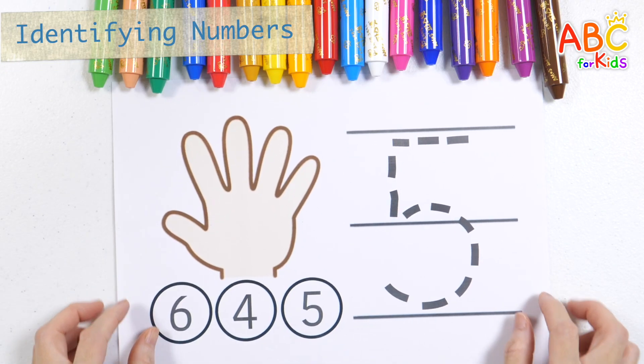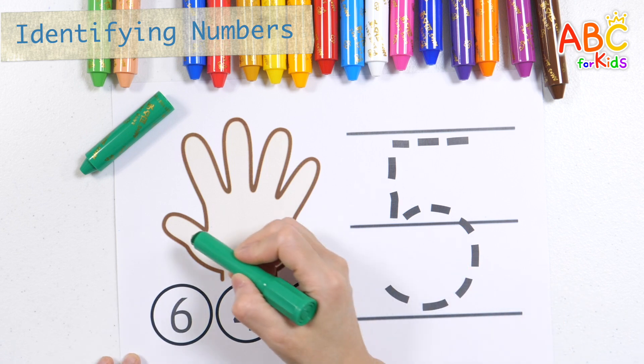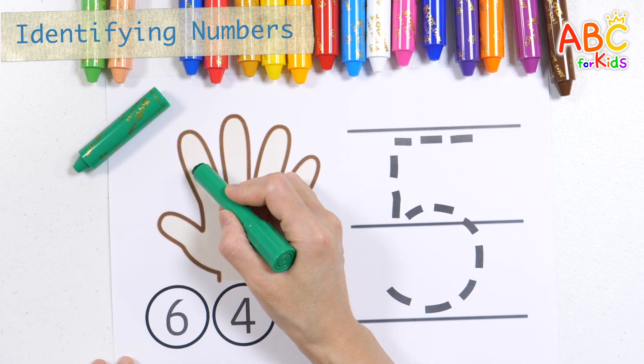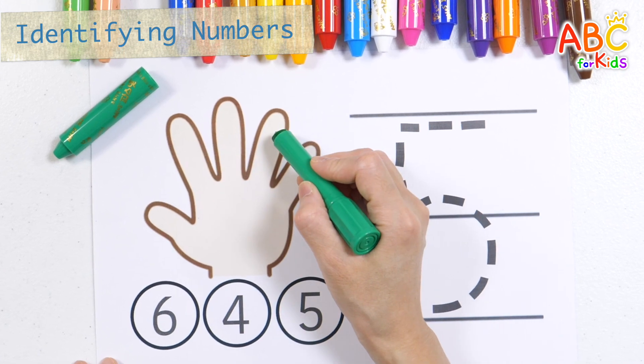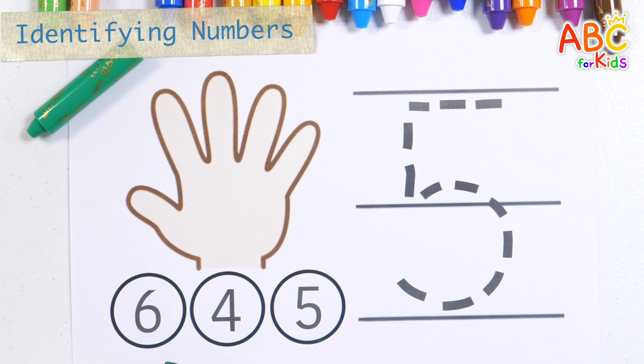Let's count each finger with a green crayon. 1, 2, 3, 4, 5. Let's find and color the number 5.